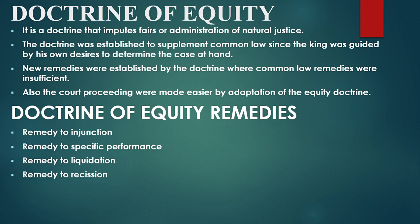After common law, in order to supplement it, another doctrine was developed — the doctrine of equity. It is a doctrine that imputes fairness and administration of natural justice, ensuring that natural justice was guaranteed. The doctrine was established to supplement common law since the king was guided by his own desires in determining cases, and could sometimes be biased.